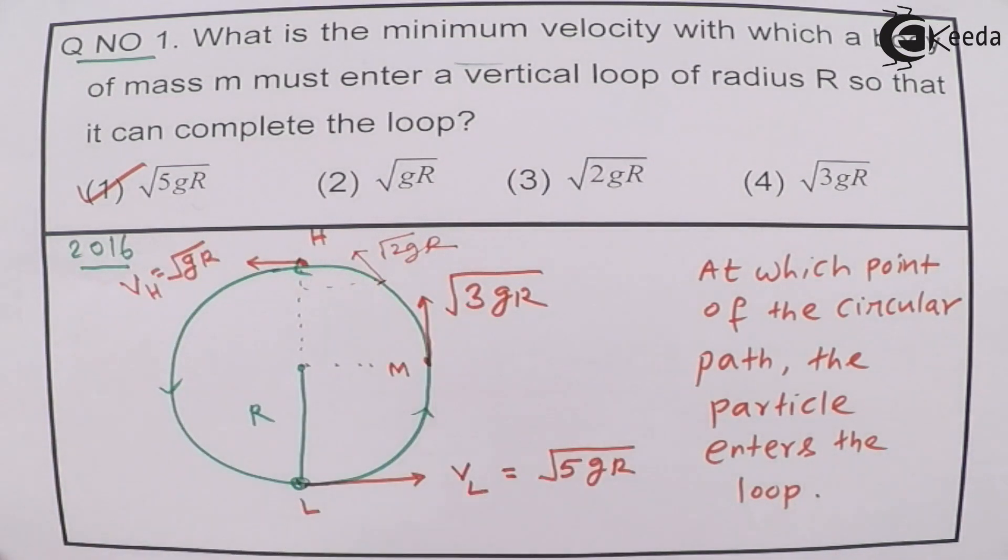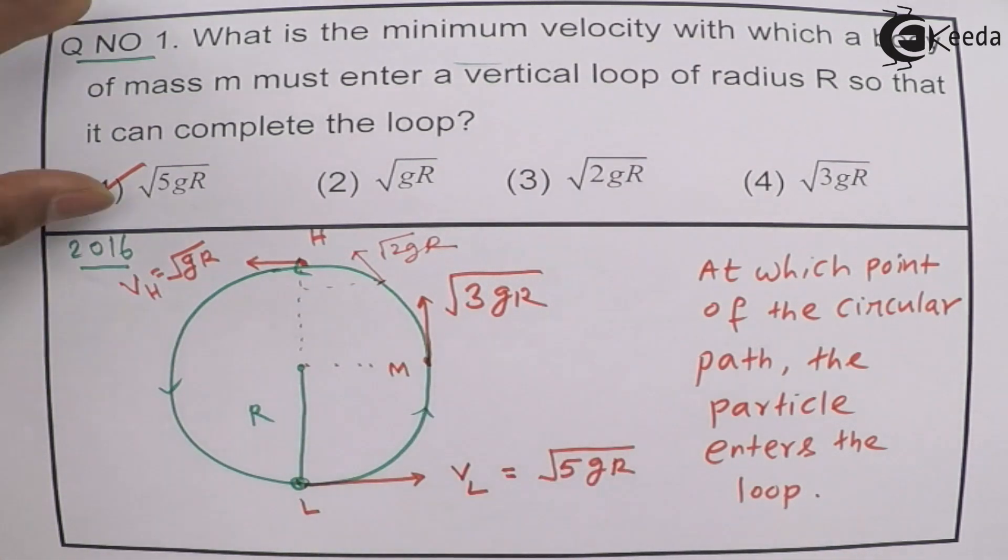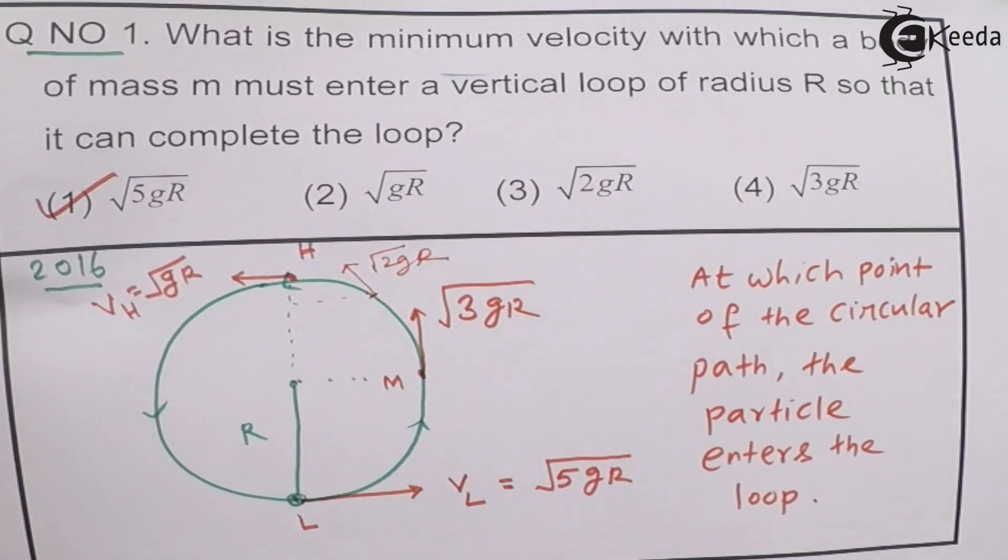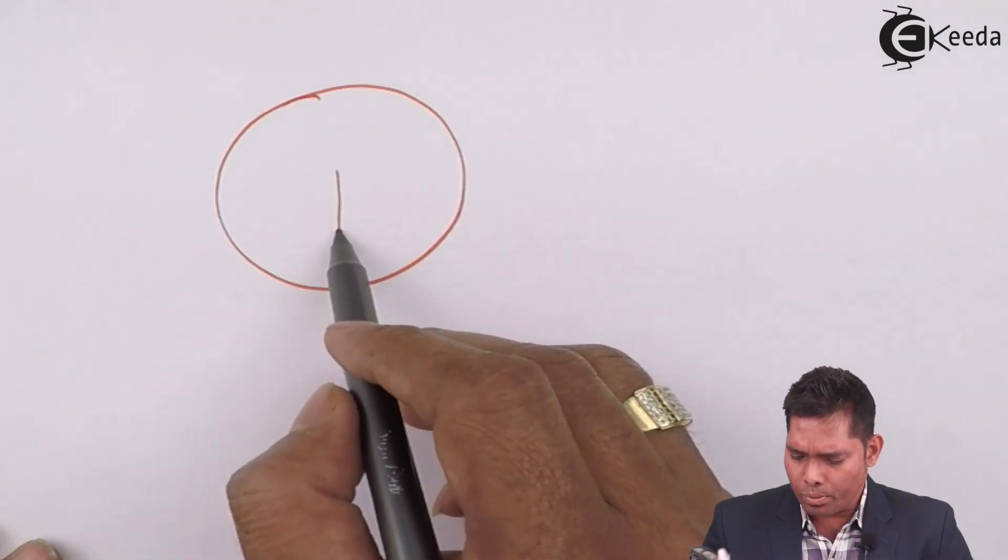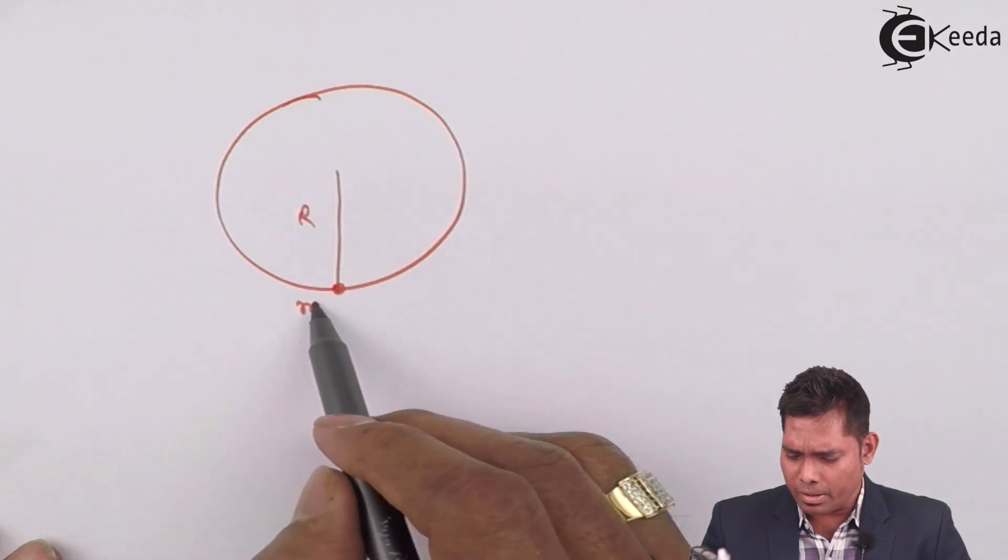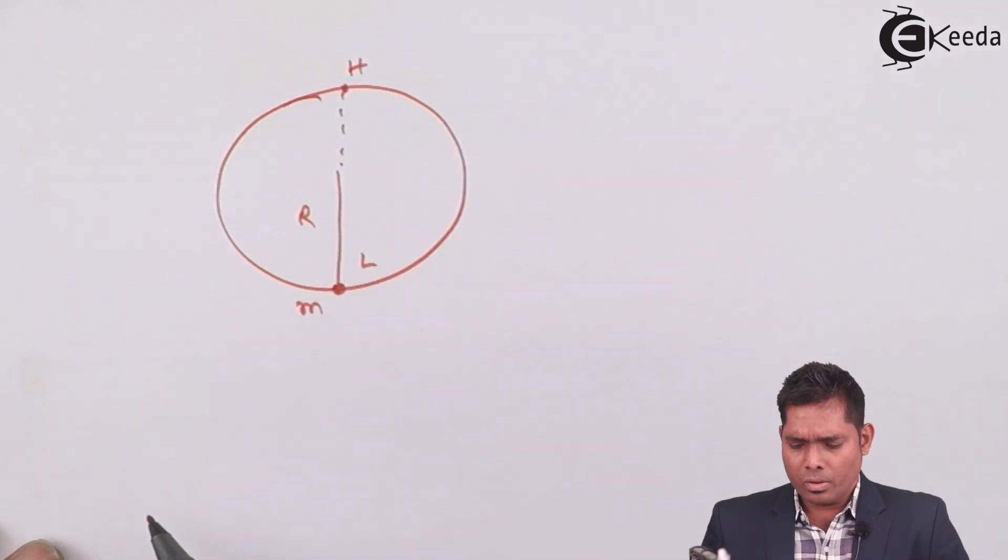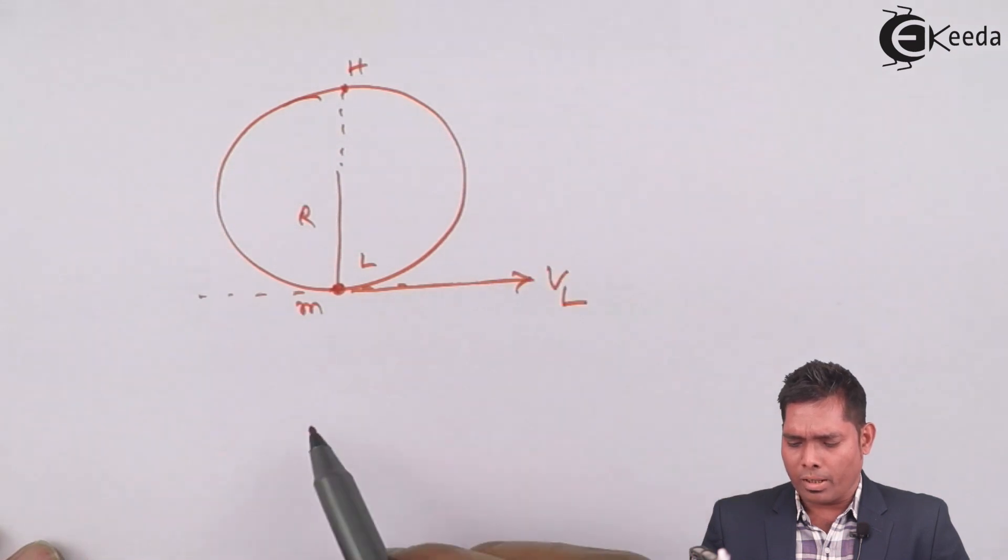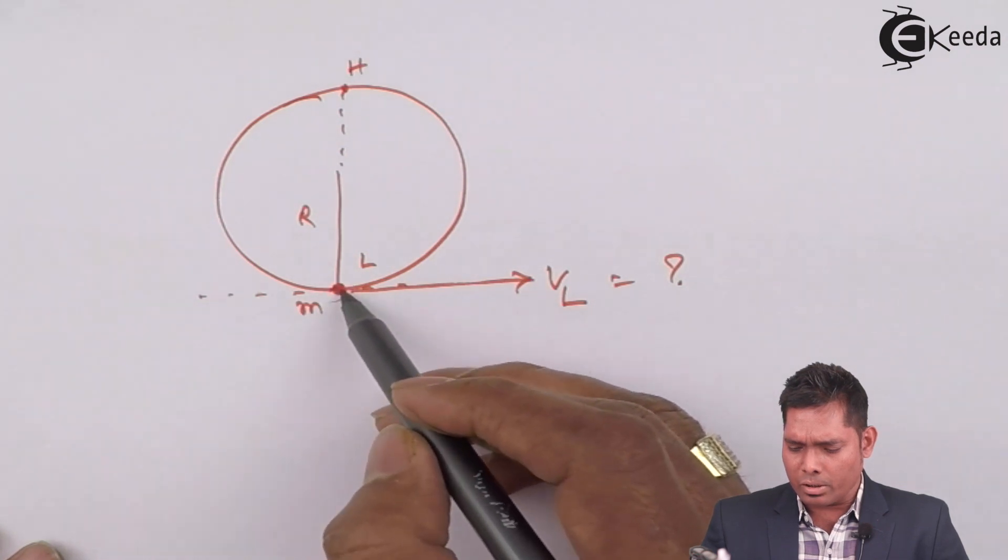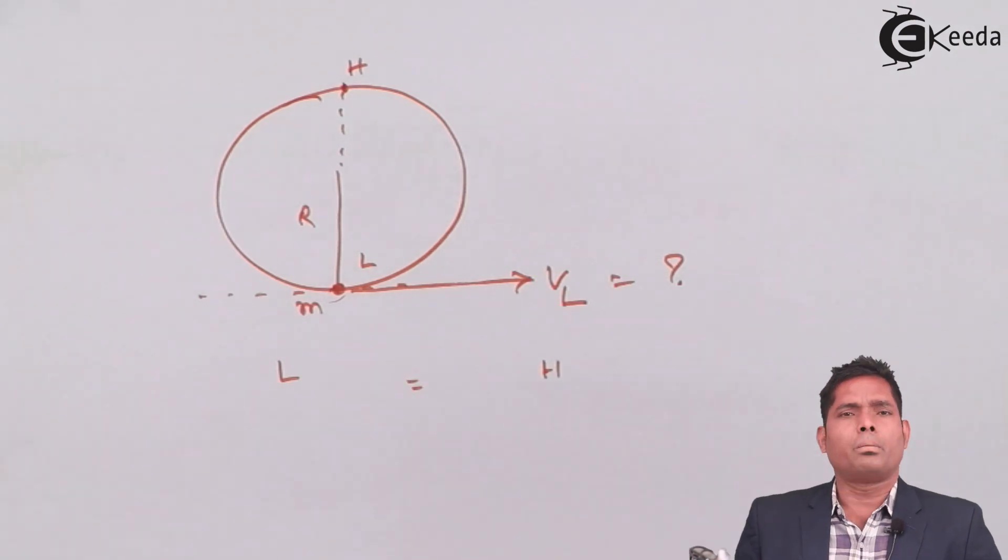And how this is done? Just by equating the energies. How this is done? Just let me just get that value of √(5GR). This is the loop. This is the radius R. This is the body of mass M. And this is the highest point. This is the lowest point. We suppose that I am providing a velocity V lowest point, VL. That is what I have to find. Then, I know that the total energy here at this lowest point and total energy here at the highest point, that energy will balance out.